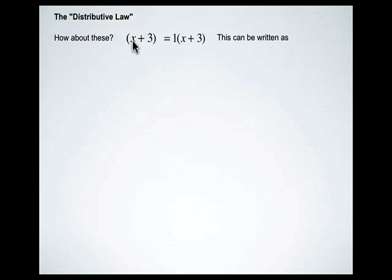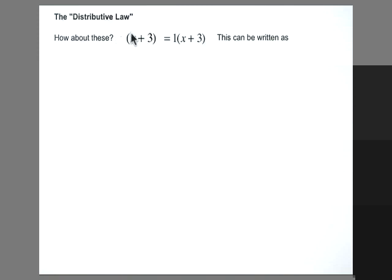So when you have x plus 3 by itself, it's really the same as 1 times x plus 3, because 1 times anything remains the same.